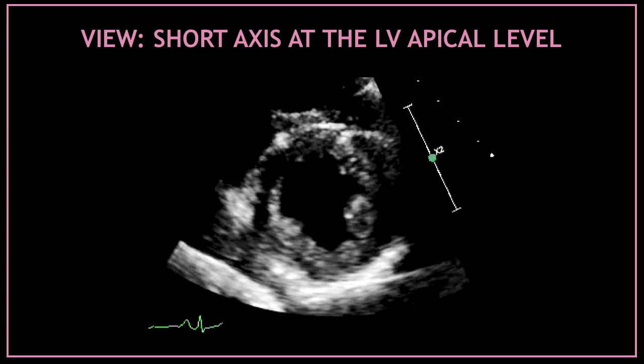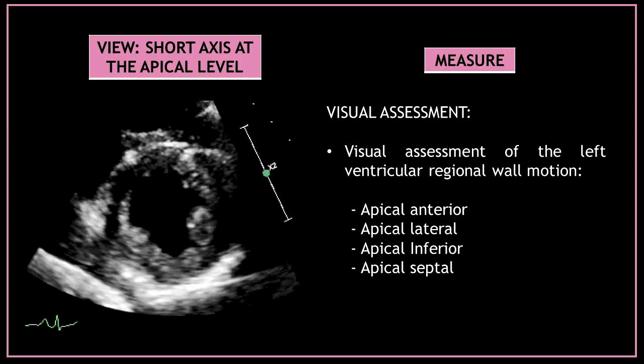There are different segments you can obtain from the parasternal short axis view. First I'm going to show you all the minimum data set you need to obtain from the parasternal short axis view at the left ventricular apical level. After obtaining this view, the first thing you have to do is a visual assessment of the left ventricular regional wall motion. At this level you can only see apical segments, so assess for any regional wall motion abnormalities of the apical anterior, apical lateral, apical inferior, and apical septal segments.